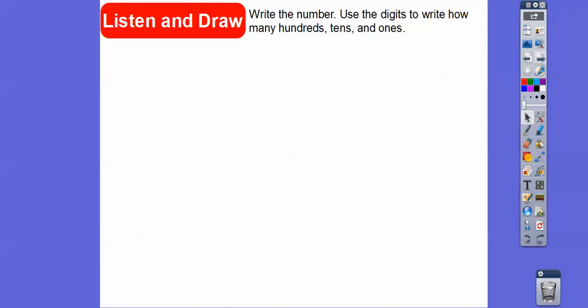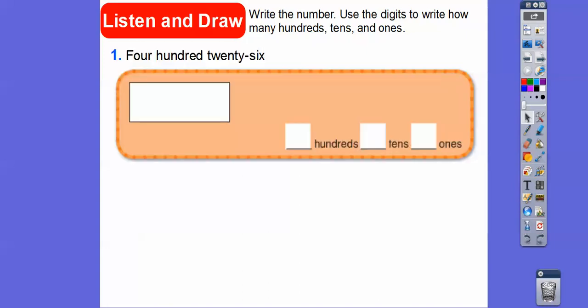So write the number. Use the digits to write how many hundreds, tens, and ones there are. So this one is 426. So the four goes in the hundreds spot. The 26, so it's going to be 2-6. The two is going to go in the tens, and that's going to go in the ones spot. So there is 426 right there.